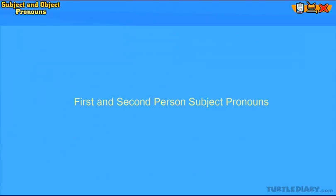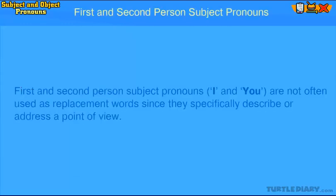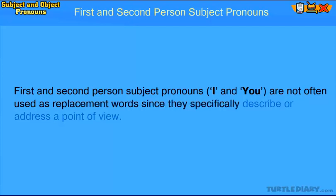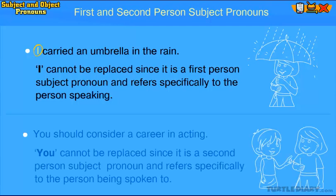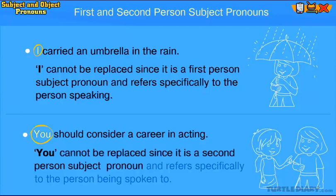First and Second Person Subject Pronouns. I and you are not often used as replacement words since they specifically describe or address a point of view. I carried an umbrella in the rain. I cannot be replaced since it is a First Person Subject Pronoun and refers specifically to the person speaking. You should consider a career in acting. You cannot be replaced since it is a Second Person Subject Pronoun and refers specifically to the person being spoken to.